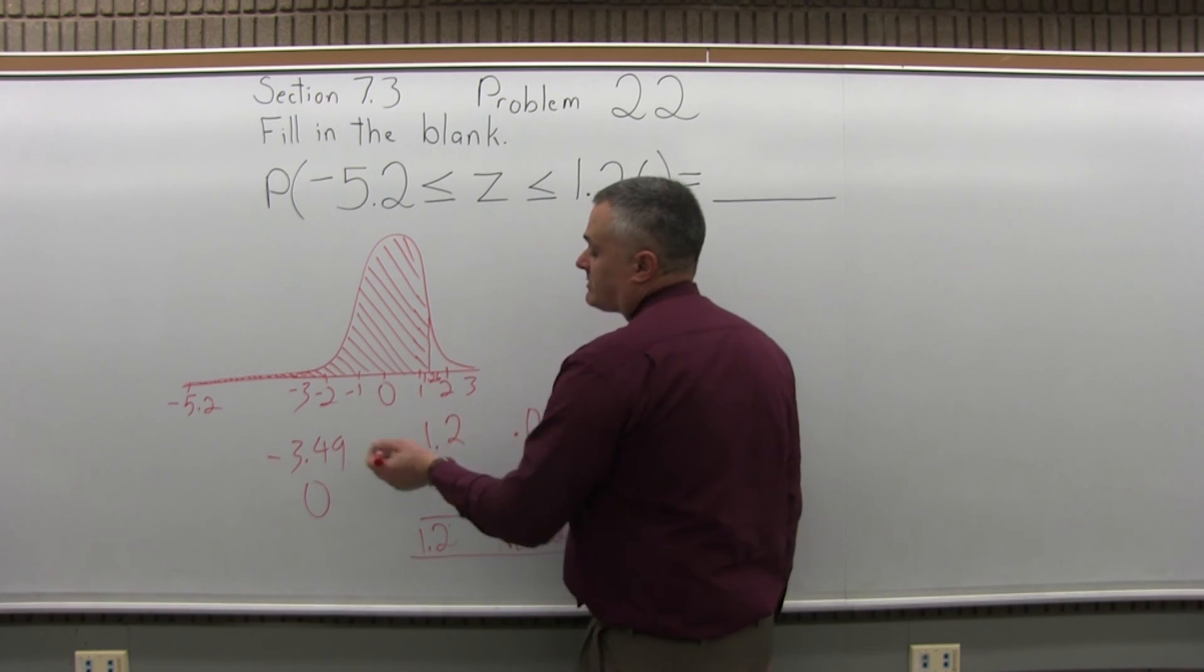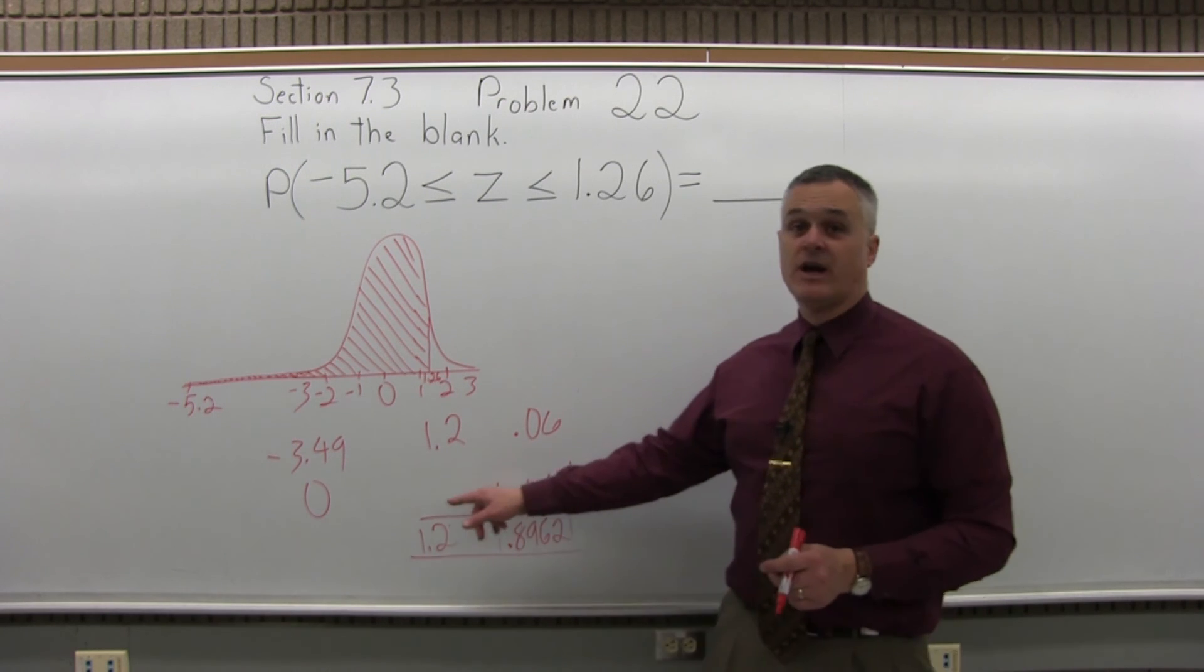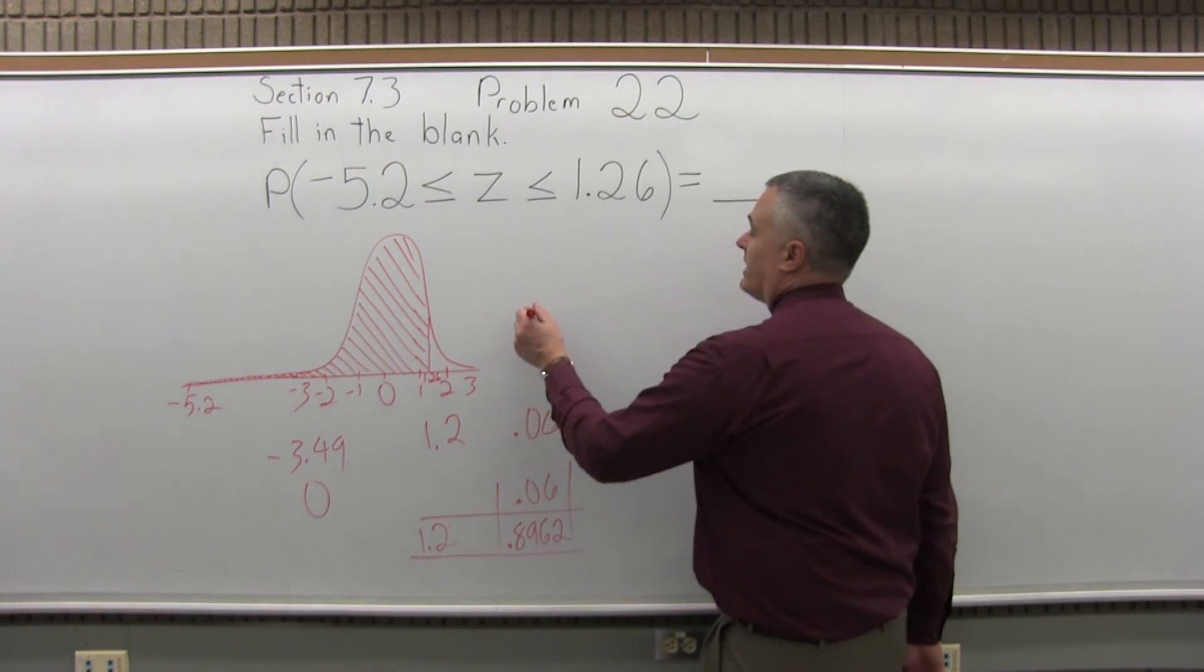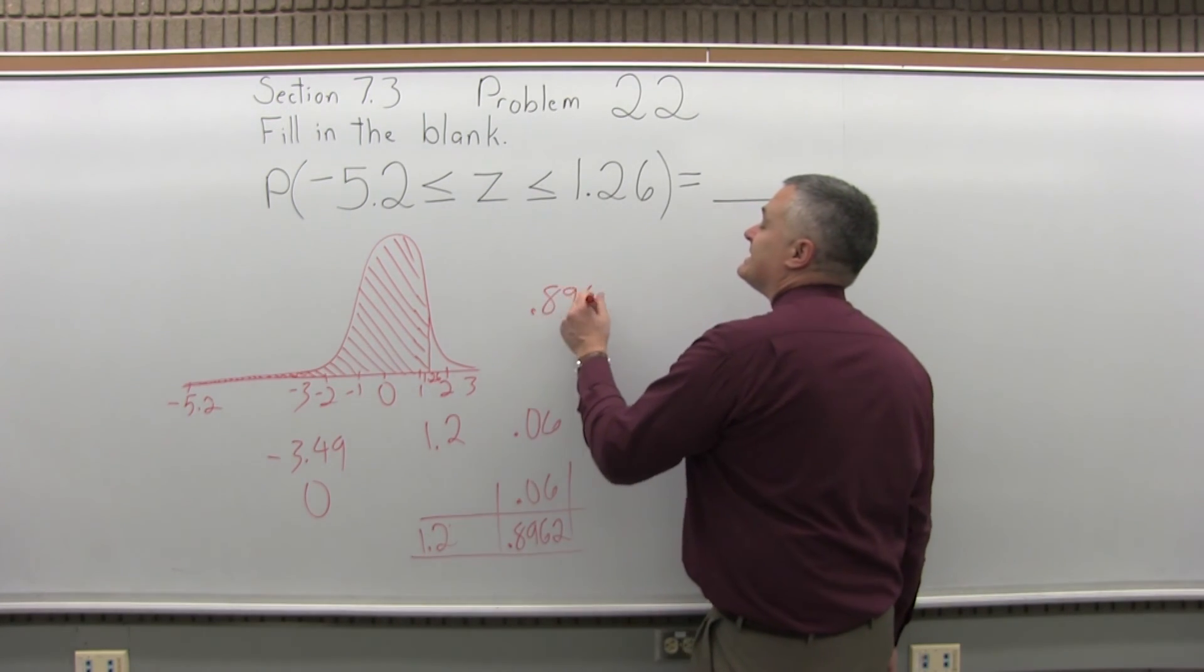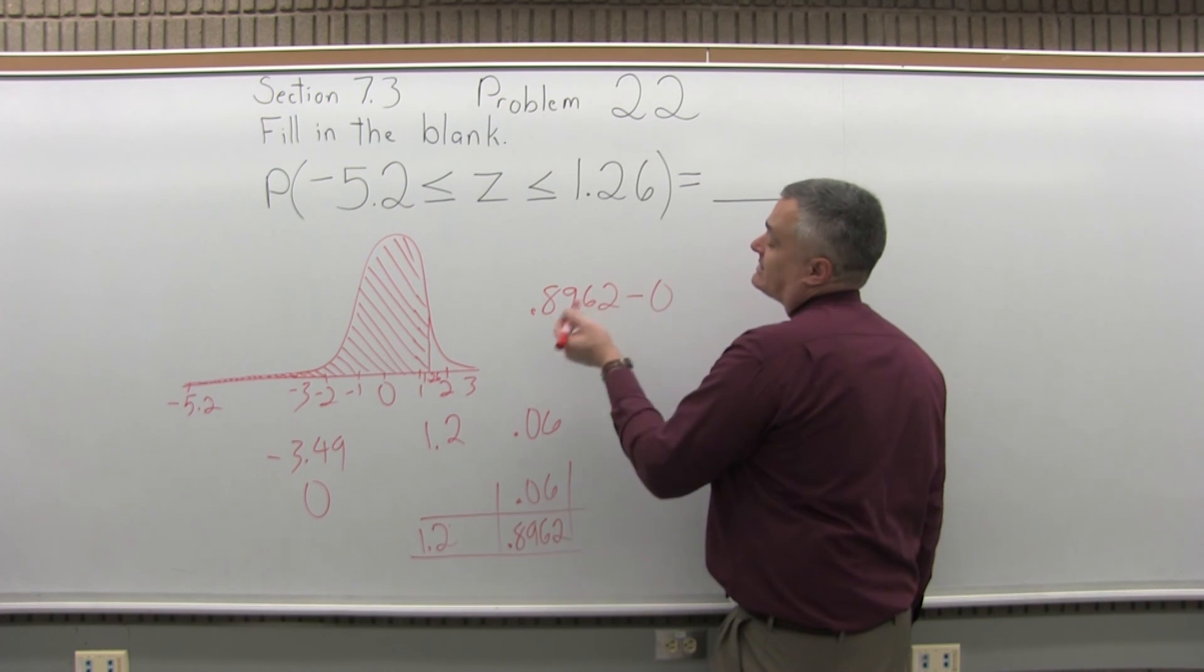So now what I'm supposed to do is subtract the two chart values, so I'm going to subtract 0.8962 minus zero, so it really just stays 0.8962.